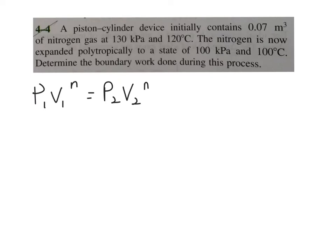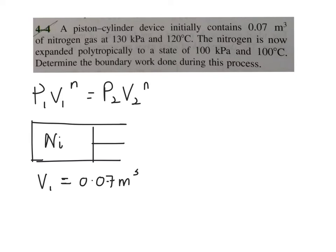So given to you here is a piston cylinder where it initially contains 0.07 meter cube, which is your V1 equals 0.07 meter cube. And this is actually your nitrogen gas, one form of ideal gas. And your initial pressure is said to be 130 kilopascal. And also given to you the temperature is 120 degrees C.